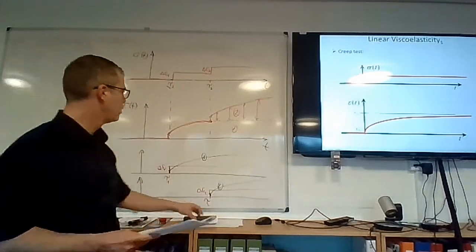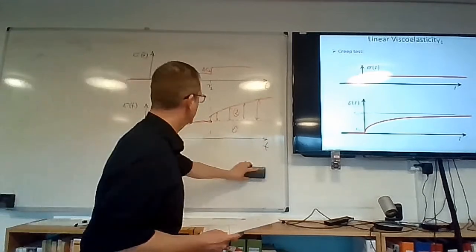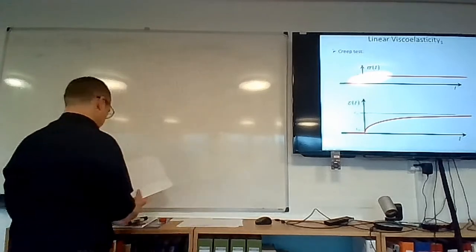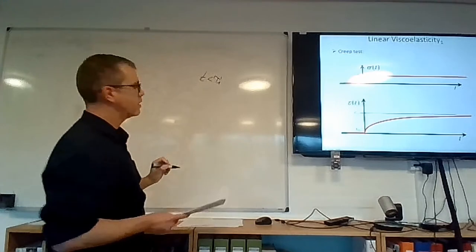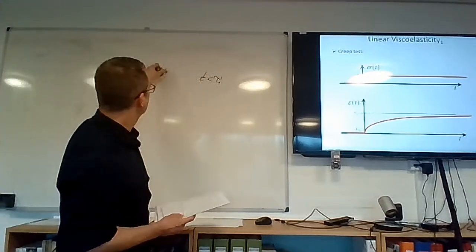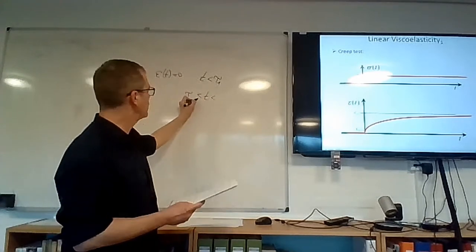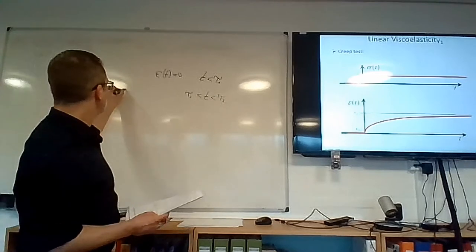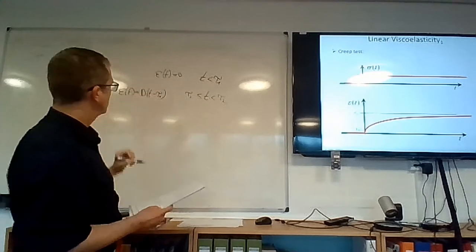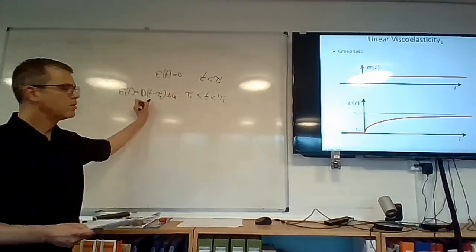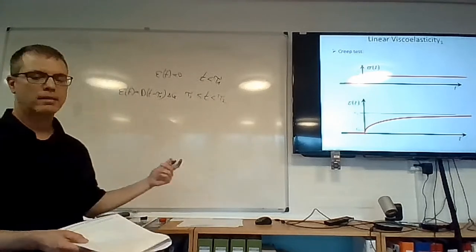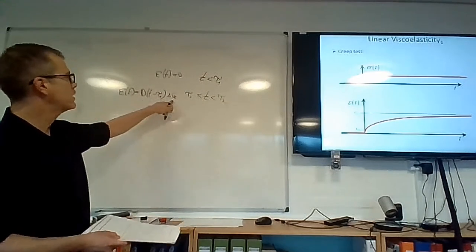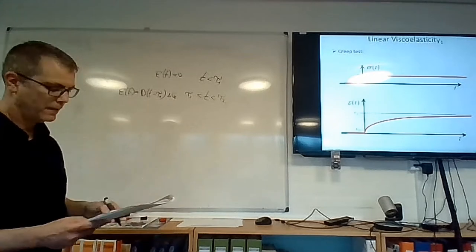Let's try to write this in a formal way. As long as time is before tau-1, the strain is zero. In the period where t is greater than or equal to tau-1 but before tau-2, the strain is given by the creep compliance D evaluated at t minus tau-1, multiplied by delta-sigma-1. We subtract tau-1 from t because we just need to count the time elapsed since delta-sigma-1 was applied. So there is just this time-shifting expressed by taking t minus tau-1.